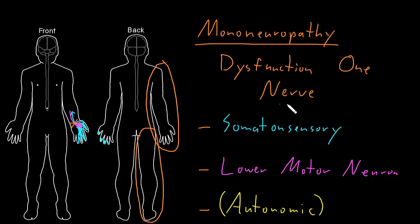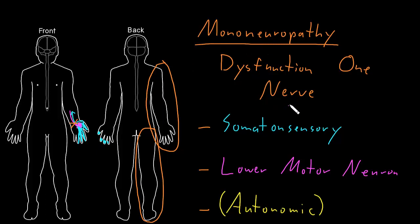By learning the anatomy of the nerves most commonly affected with mononeuropathy syndromes — particularly their somatosensory territory and what muscles their lower motor neurons innervate — you can recognize the patterns these syndromes create and figure out which nerve is involved. That's very helpful because different disorders tend to affect different nerves, and so identifying the nerve can point you toward the right diagnosis for the underlying disorder causing the mononeuropathy syndrome.